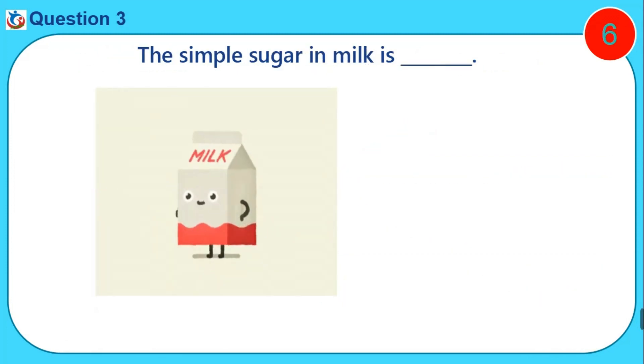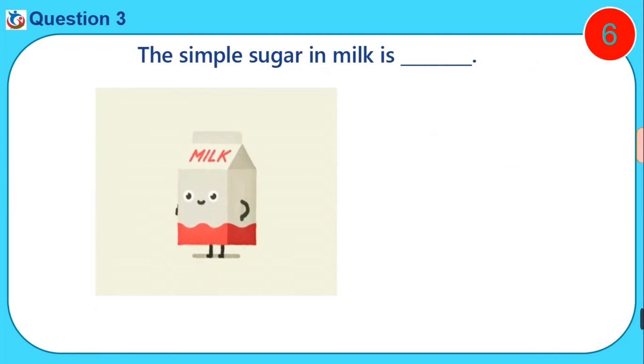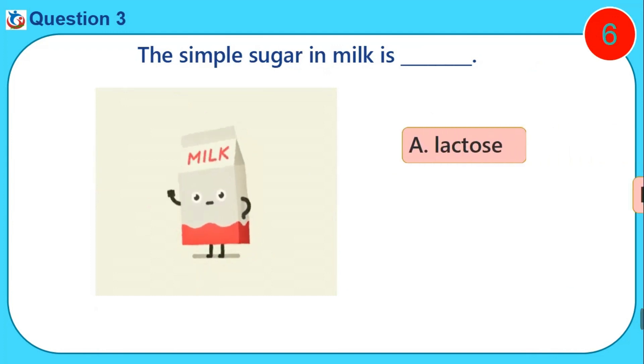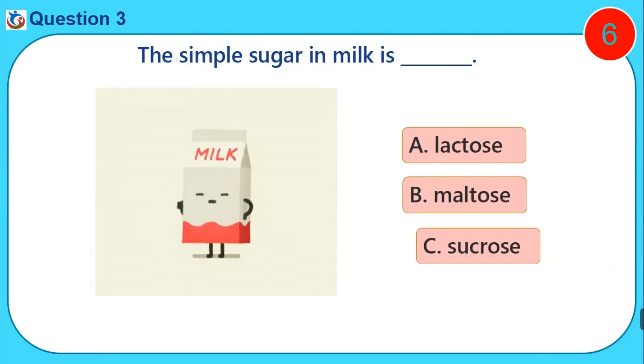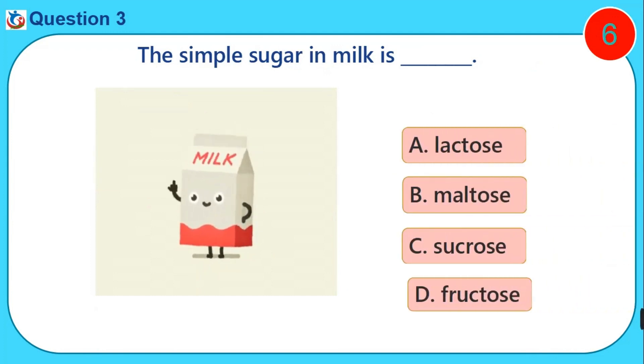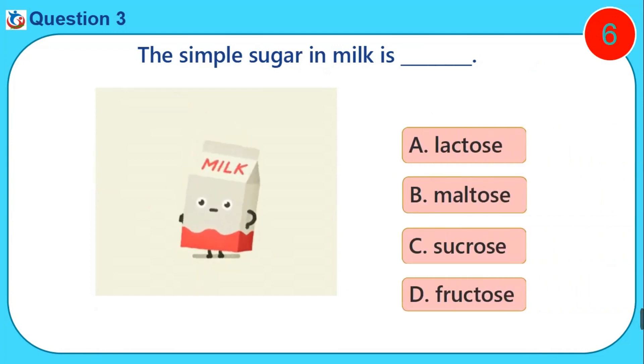The simple sugar in milk is dash. A. Lactose. B. Maltose. C. Sucrose. D. Fructose.